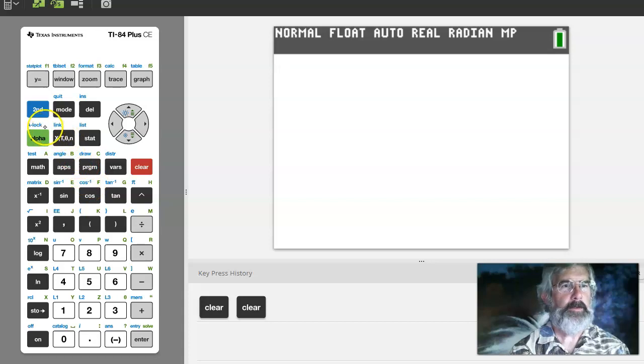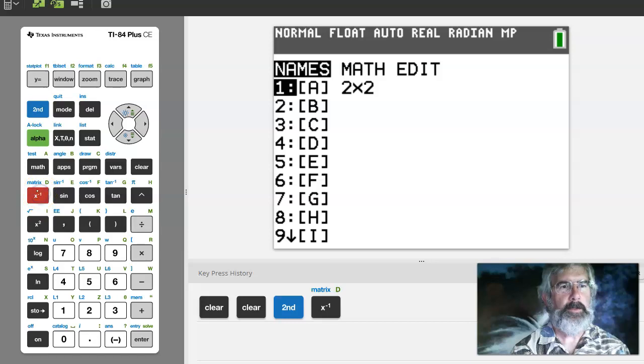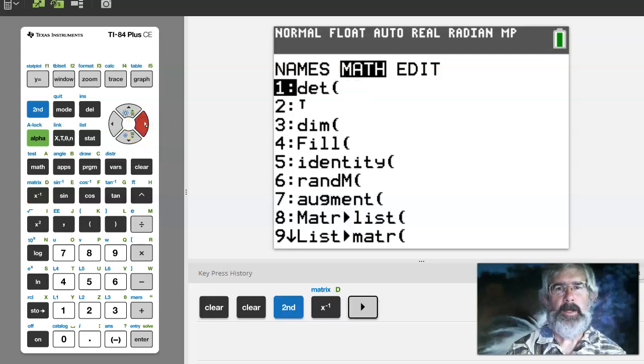So first of all let's take a look at the matrix menu. Second function of the inverse key here is matrix. There's three menus here within the matrix menu: names, math, and edit.